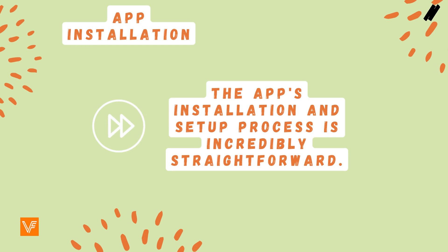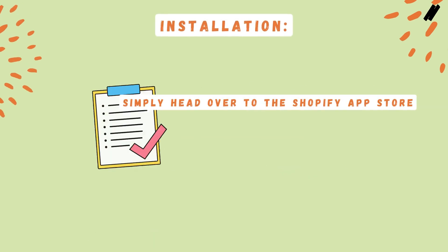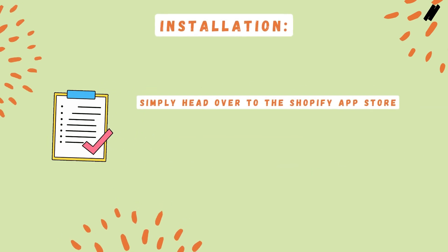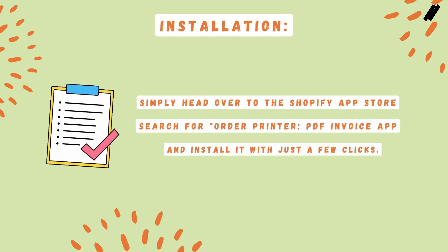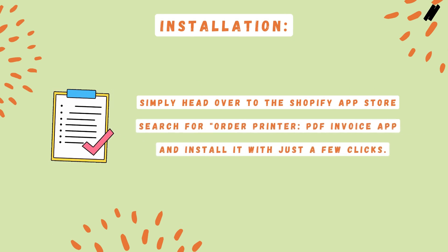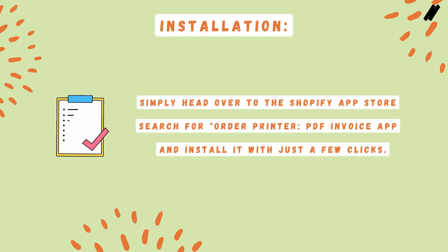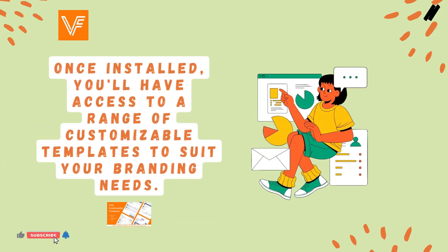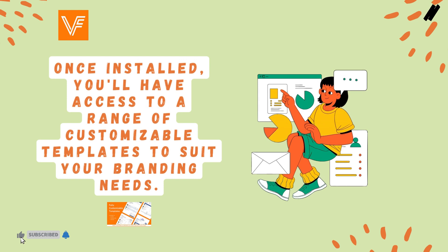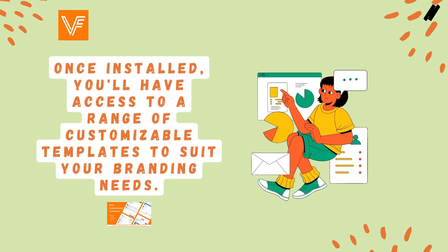The app's installation and setup process is incredibly straightforward. Simply head over to the Shopify App Store, search for Order Printer PDF Invoice App, and install it with just a few clicks. Once installed, you'll have access to a range of customizable templates to suit your branding needs.